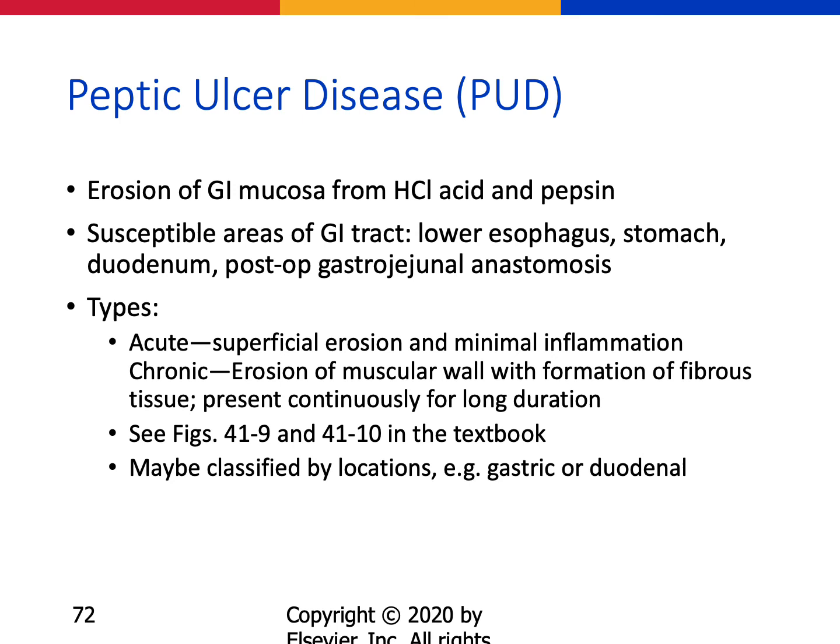There are two types of peptic ulcers: acute, which is superficial erosion with minimal inflammation, and chronic, which has significant erosion into the muscular wall with formation of fibrous tissue and is present continuously over a longer duration.